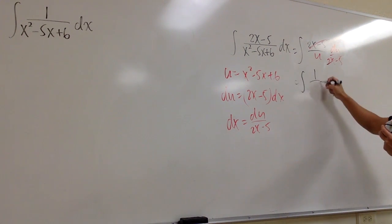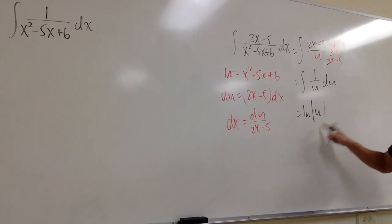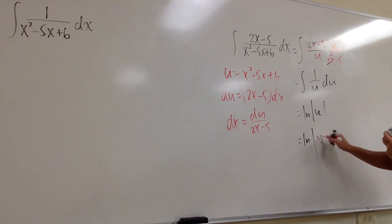And we are just integrating 1 over u in the u world, so we get ln absolute value of u. At the end, u is that, so we plug in. So this is going to be ln absolute value of x squared minus 5x plus 6. And then we are done, so we put a plus C, and this is it.